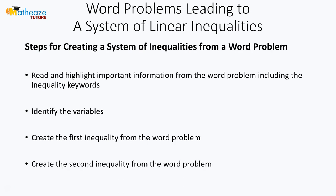Now let's look at the steps for creating a system of inequalities from a word problem. The first thing you want to do is to read through the word problem and then highlight important information, including the inequality keywords. The next thing is to identify variables, and then we create the first inequality from the word problem, and you create the second inequality. Here we'll focus on word problems that only have two inequalities in the system.